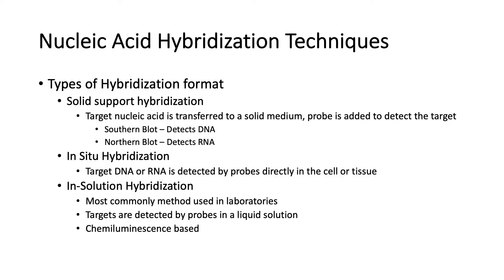There are a variety of hybridization formats we can use. First, we have solid support hybridization. Here, target nucleic acid is transferred into a solid medium and a probe is added to detect the target. There are two main types: the Southern blot, which detects DNA, and the Northern blot, which detects RNA.